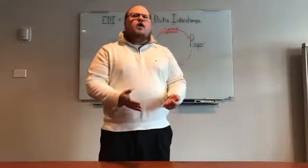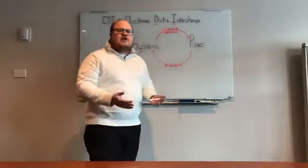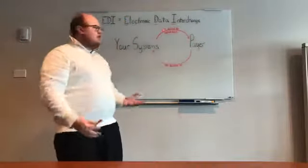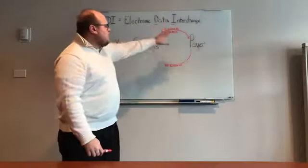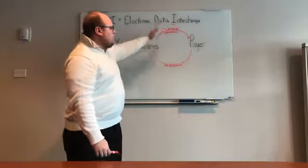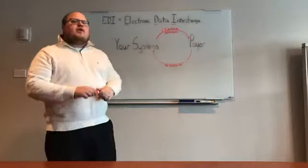And generally, the payer is going to respond with an 835, which is your remittance file. That's, hey, what did I get paid for? What did I get denied? Why did it get denied? What partial paid? So those are things that a lot of people know about. This 837 and this 835, this cycle of information going to your payer and back from your payer.